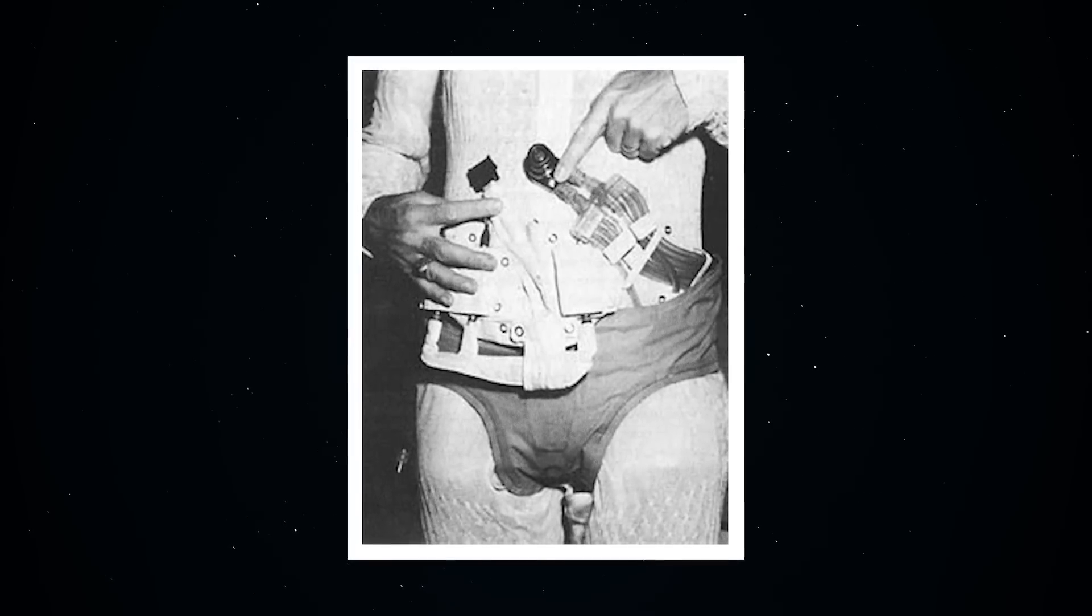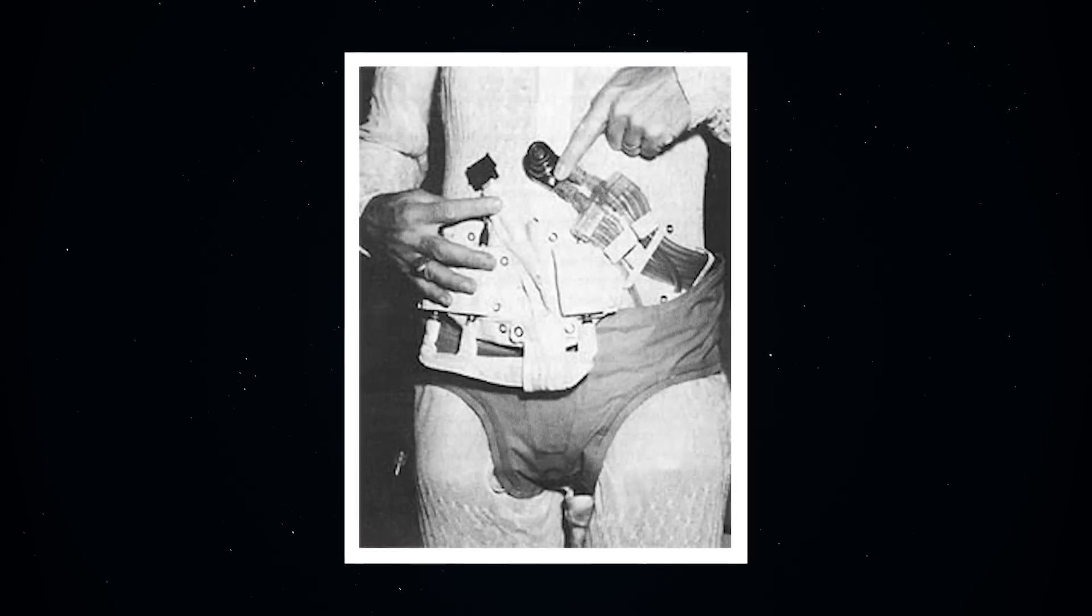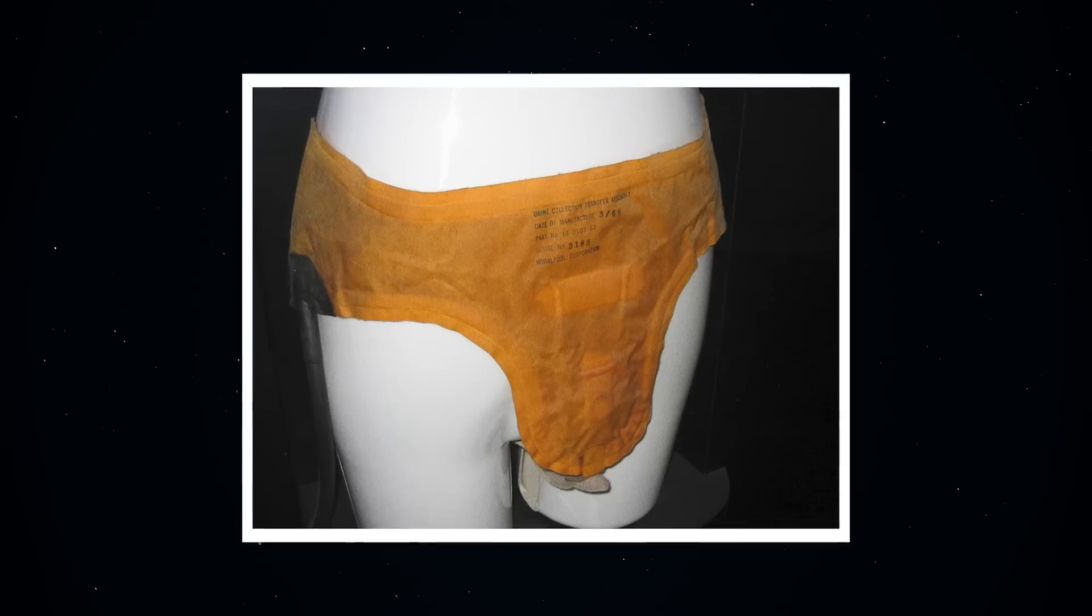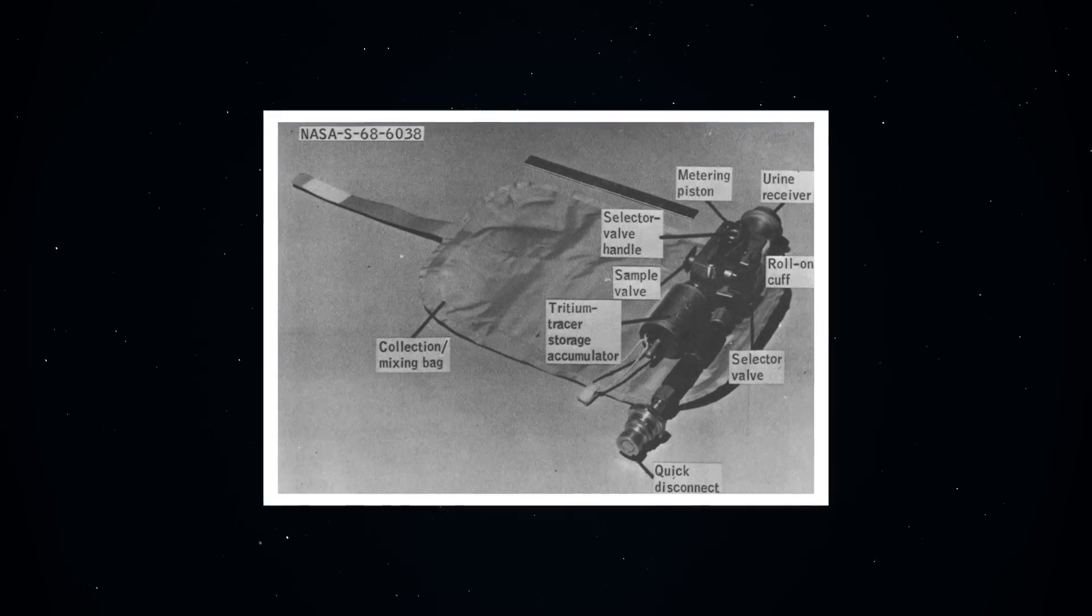It was a containment bag that was worn around the waist, kind of like a belt, that connected to the male anatomy with a hose, a roll-on sheath that was basically a latex condom, and a valve to ensure the flow only travelled in one direction.